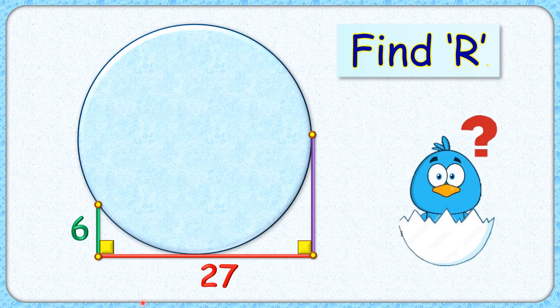Welcome everyone. This interesting question gives us a circle with purple and red line segments as tangents to the circle. The length of the green and red line segments is given as 6 and 27 centimeters. The exciting part is that with this limited data, we have to find the radius of the circle.